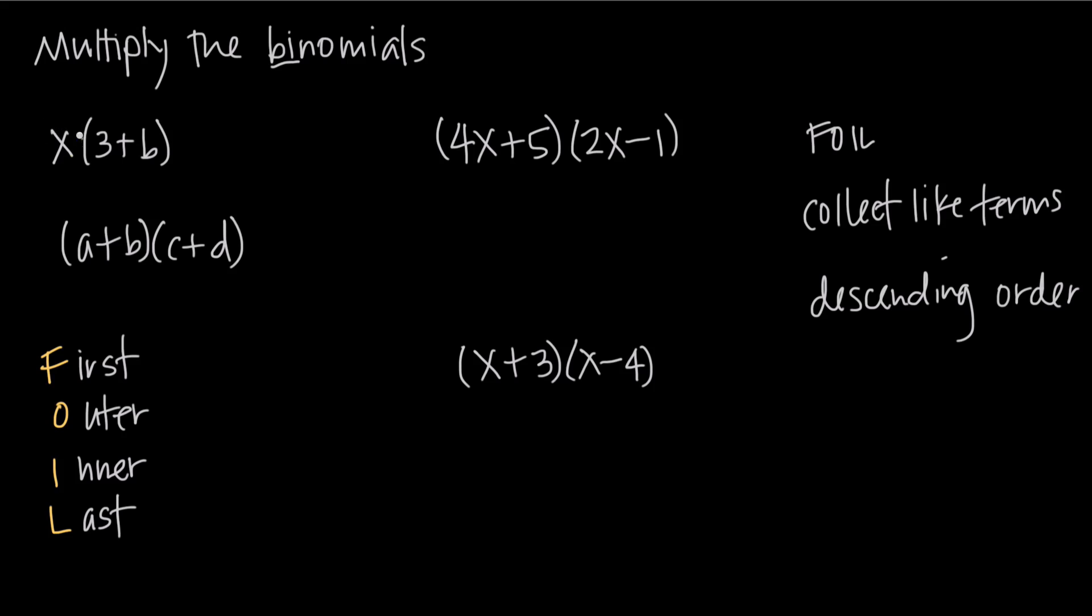So if we have something, a variable or a real number, outside of these parentheses that's sitting just outside, it's telling us to multiply this value by every term inside of the parentheses. So when we do that, our result is going to be x times 3, or 3x. We keep the addition sign, so plus x times b, or bx. That's the distributive property.